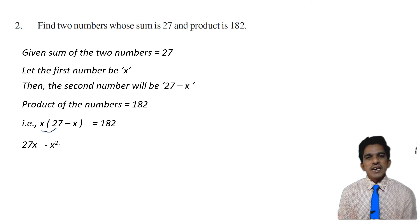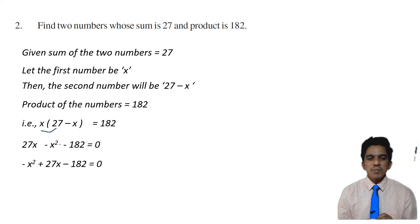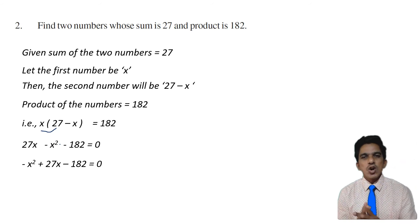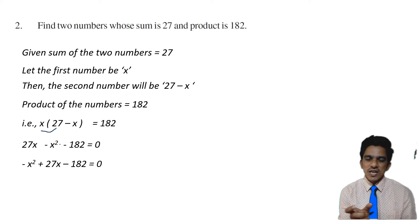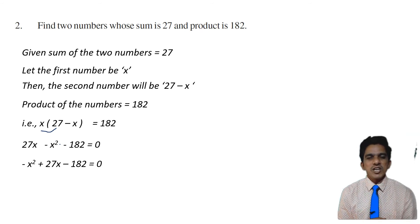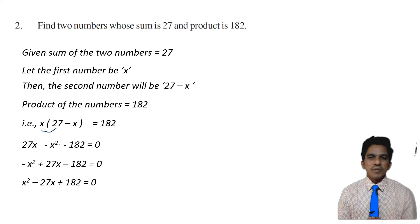On the right side we have 182. Transposing 182 to the left side gives minus 182 equal to 0. So we have minus x squared plus 27x minus 182 equals 0. Writing in standard form, the quadratic term has a negative sign. Whenever you have such a situation, multiply the whole equation by minus 1. Then the equation becomes x squared minus 27x plus 182 equals 0, and all the signs change.